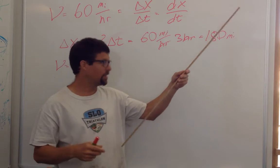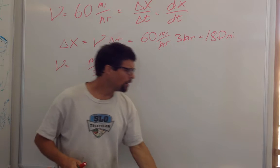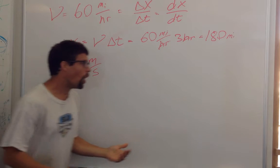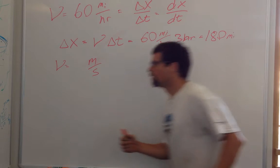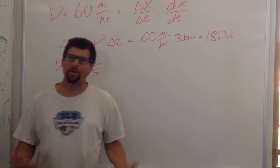What does that look like? Well, every second, every second you go about one meter. So that would be like one, two, three, four. That's about a meter per second.